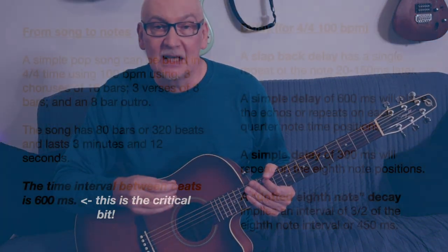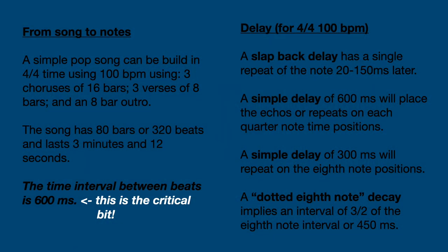A chorus and the outro are going to be eight bars long, with a 16-bar verse. When I add that all up, I get an 80-bar song. In 4/4 time, that means 320 beats. At 100 beats per minute, the song lasts 3.2 minutes, which is about 192 seconds.